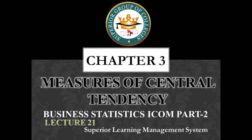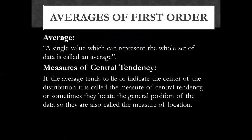We are starting Chapter 3, which covers averages of first order. Let's talk about averages. If we add all values and divide by the total number of values, then what will be the average?